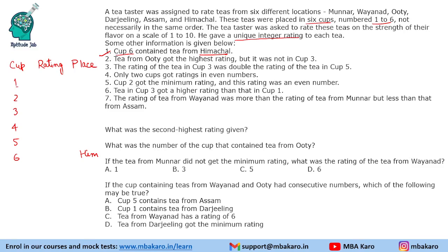Tea from Uti got the highest rating but it was not in cup 3 — we will come to that later. It can be in any other cup. The rating of the tea in cup 3 was double the rating of cup 5, so C3 = 2 × C5. Only 2 cups got ratings in even numbers. If C3 is double of C5, then C3 is definitely even.